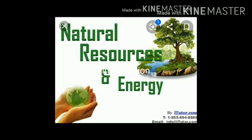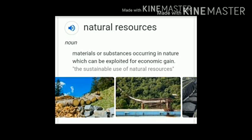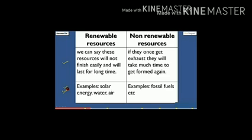We have already discussed about the natural resources in our previous chapter, chapter number 5, Combustion and Fossil Fuels. Natural resources is something found in nature that people can use to meet their needs. We have already learned that they are renewable and non-renewable. Renewable resources are regenerated by natural process in a short period of time. Examples: air, water, sunlight. Non-renewable resources are present in nature in a limited quantity and cannot be renewed in a short period of time. Examples are fossil fuels and coal.